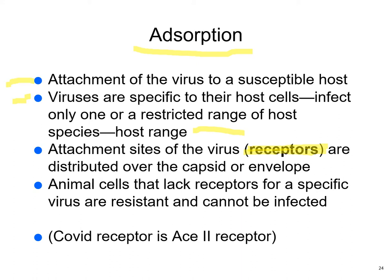The receptor for COVID is thought to be the ACE2 receptor. ACE2 receptor blockers — such as Losartan, a blood pressure medication — make one wonder whether taking Losartan decreases your chance of getting COVID. Maybe. But the vaccine is known to stop the spread of the virus, so getting vaccinated is still the proven approach.